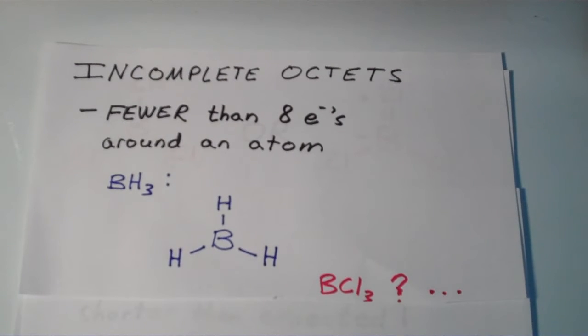One of the important exceptions to Lewis theory involves incomplete octets. An incomplete octet is when an atom has fewer than 8 electrons surrounding it. One of the main elements that tends to form incomplete octets is boron.